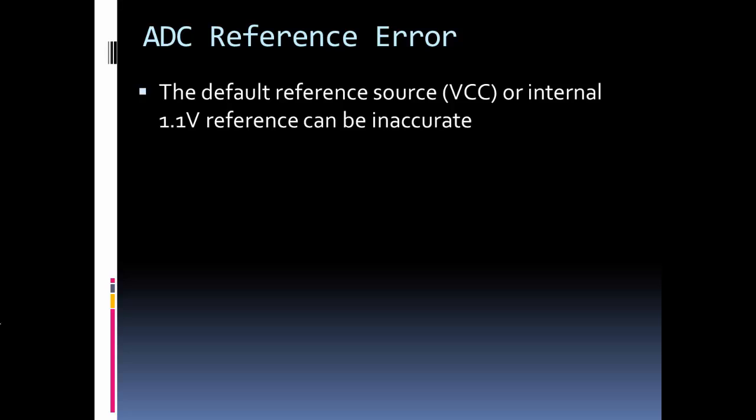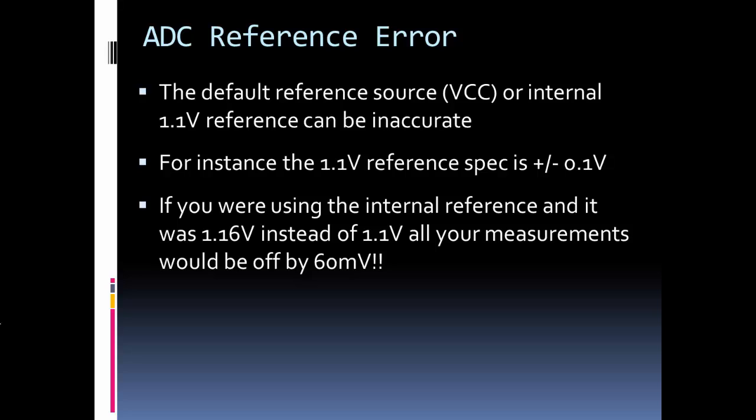Well, the internal references, whether it's VCC or 1.1 volts, can be inaccurate. For the Arduino boards, at least the UNO, VCC tends to be pretty close to 5 volt. But the 1.1 can definitely be pretty far off. And as an example, if you go to the data sheet of the chip, they spec the 1.1 reference as plus or minus 0.1 volt. Let's see what that means. Let's say you measure your reference, or your reference is really 1.16, and you think it's 1.1. That means you're going to do all your calculations in your software with 1.1, so that means every one of your outcomes is going to be 60 millivolts off. Think in the case of if we're using a temperature sensor. Temperature sensors usually represent a degree by every 10 millivolts, so you're going to be at least 6 degrees off. So that's a lot of error.